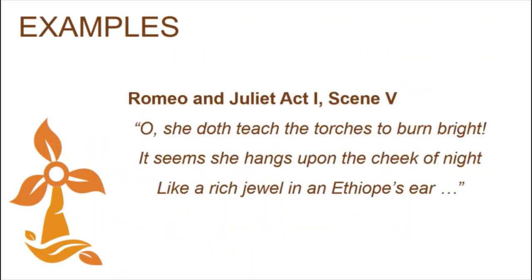Romeo and Juliet, Act 1, Scene 5: 'Oh, she doth teach the torches to burn bright. It seems she hangs upon the cheek of night, like a rich jewel in an Ethiop's ear.' Romeo praises Juliet by saying that she appears more radiant than the brightly lit torches in the hall. He says that at night her face glows like a bright jewel shining against the dark skin of an African. Through the contrasting images of light and dark — the use of visual imagery — Romeo portrays Juliet's beauty.